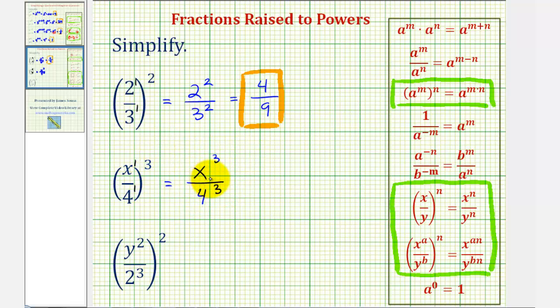We cannot simplify x to the third, because we don't know the value of x, but we can simplify four to the third. That's equal to four times four times four, or 64. So this simplifies to x to the third divided by 64.